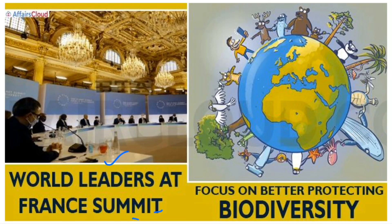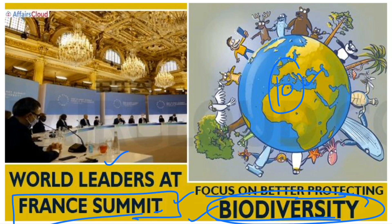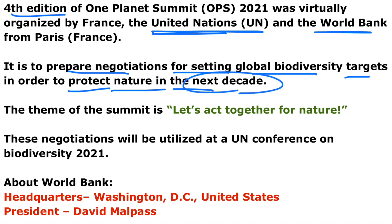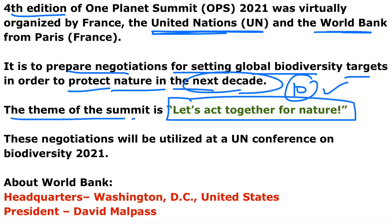This meeting of 2021 was hosted by France — it is also known as the France Summit — focusing on better protecting biodiversity over the next 10 years, from 2020 to 2030. It is the fourth edition, organized by the United Nations and the World Bank, to prepare negotiations for setting global biodiversity targets to protect nature in the next decade. The main theme is 'Let's Act Together for Nature.'